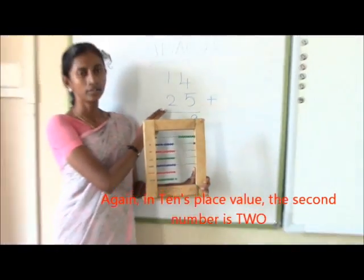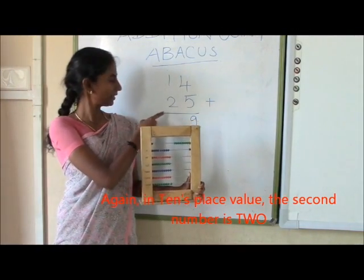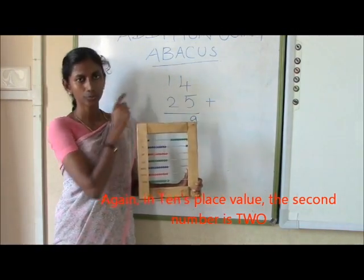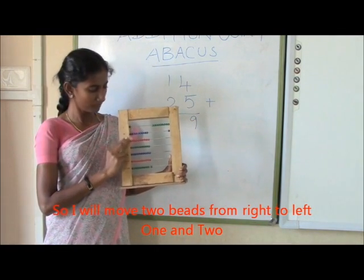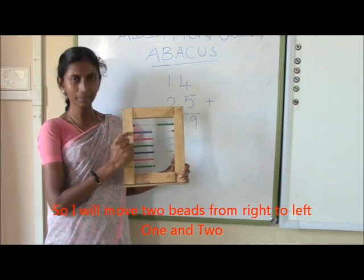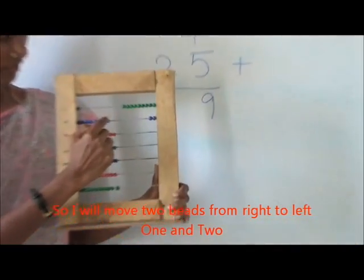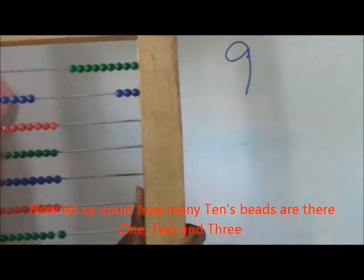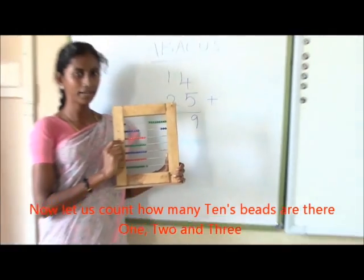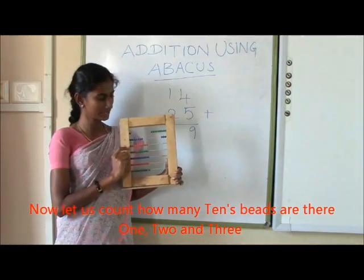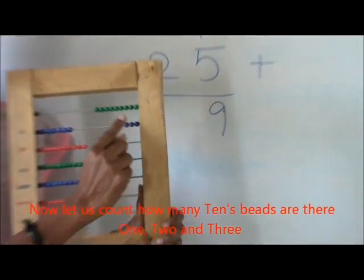In tens place value, the second number is 2. So I will move 2 blue bits from right to left: 1 and 2. Now let us count how many tens bits are there: 1, 2, 3.